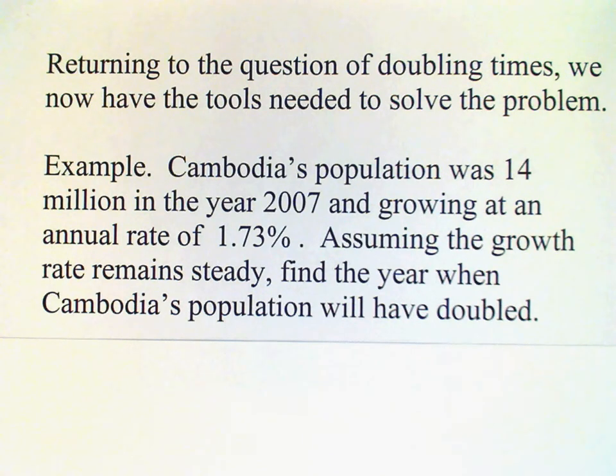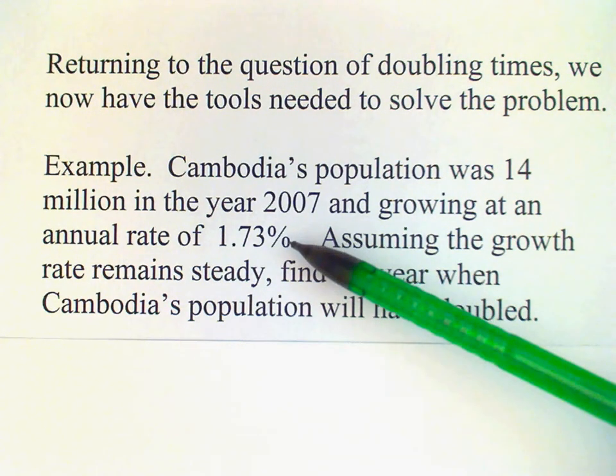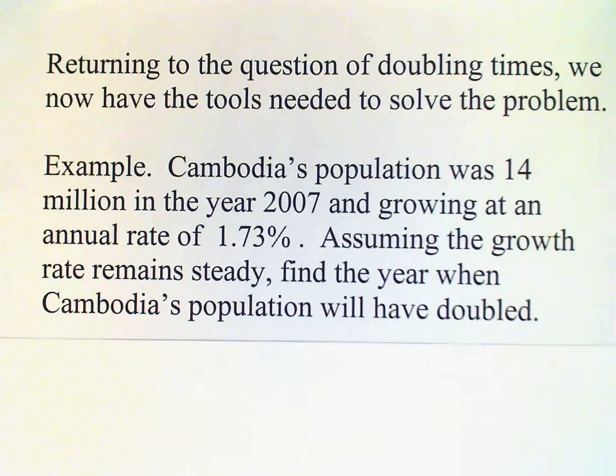in the year 2007 and the population is growing at an annual rate of 1.73%. Assuming the growth remains steady, find the year when Cambodia's population will double. Again, this is a big assumption that the growth rate remains the same, but we have to make that assumption in order to do the problem.